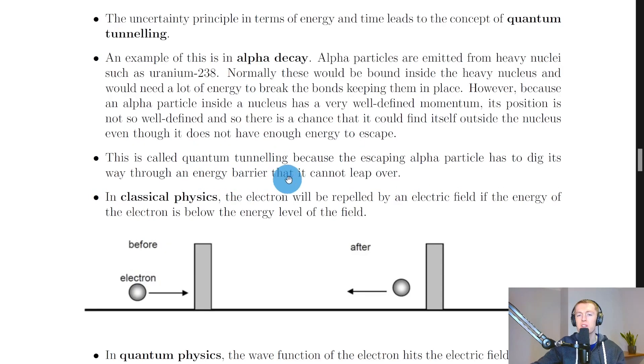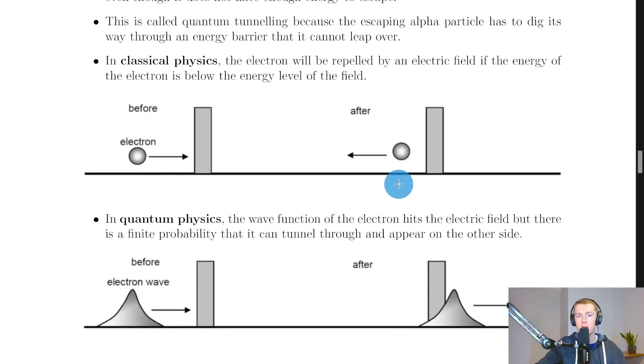This is called quantum tunnelling because the escaping alpha particle has to dig its way through an energy barrier that it cannot leap over. And we can think about this in terms of energy barriers.